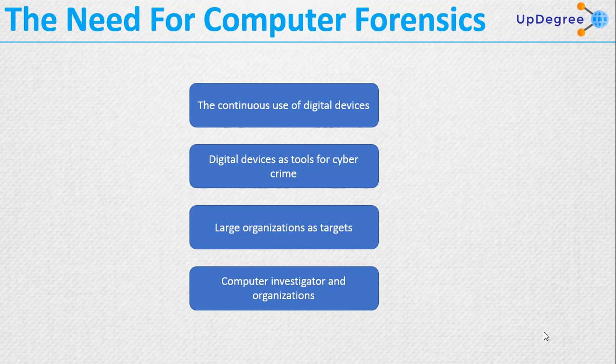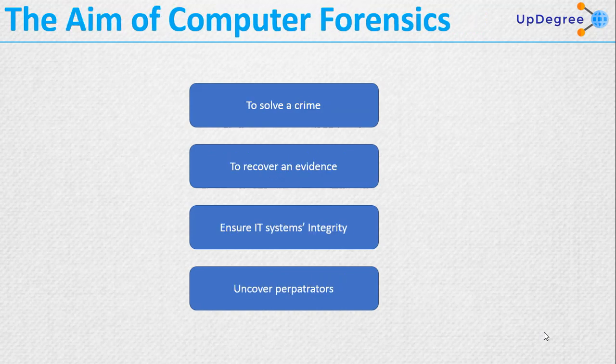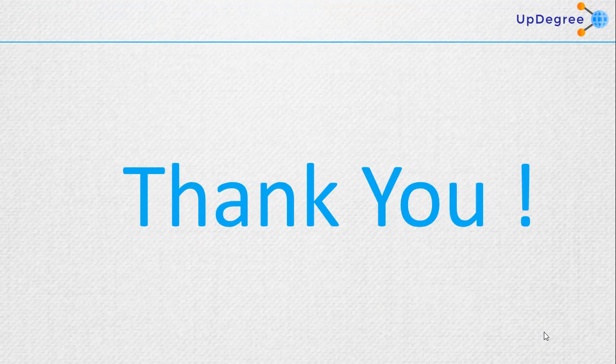A computer forensics investigator mainly focuses on the after-the-attack phase. Computer forensics has to deal with issues that lead to recovering evidence and preserving it so that it is admissible in a court of law. The aims of computer forensics: the first is to solve a computer crime; the second is to recover evidence that is admissible in a court of law; the third is to ensure the integrity of IT systems and its assets in an organization; and the fourth is to uncover the perpetrators of a particular crime.